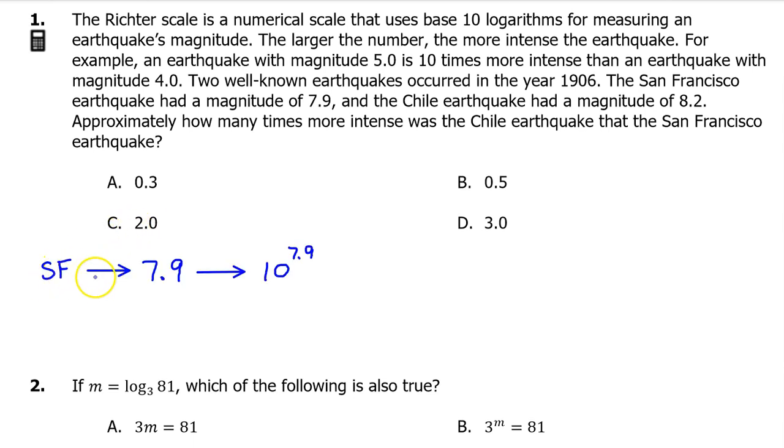The San Francisco earthquake had a magnitude of 7.9 on the Richter scale which corresponds to 10 to the 7.9 power on a non-logarithmic scale. The Chile earthquake had a magnitude of 8.2 on the Richter scale which corresponds to 10 to the 8.2 power on a non-logarithmic scale.